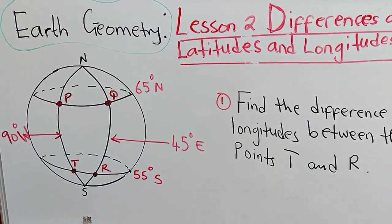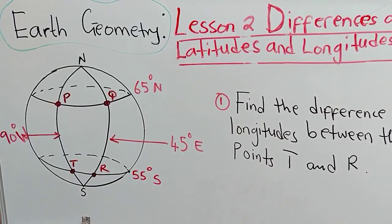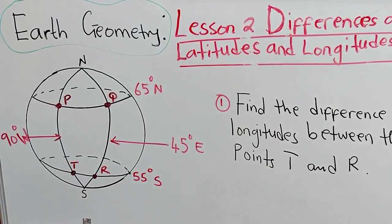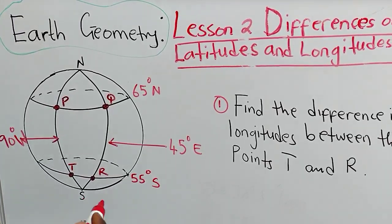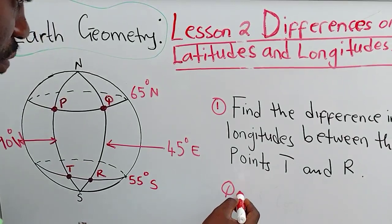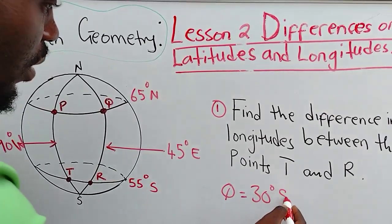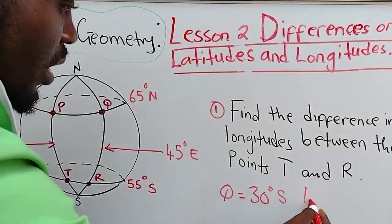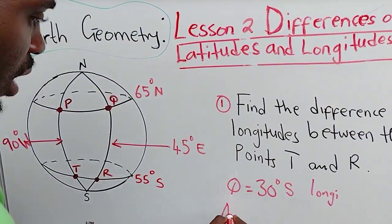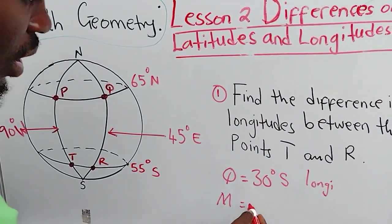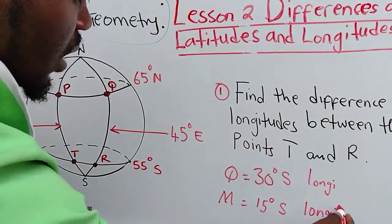Point number 1: if the longitudes are lying on the same side of the Greenwich meridian, you are supposed to subtract. For example, if you are having point Q with a longitude lying at 30 degrees south, and you also have point M lying on 15 degrees south — this is also a longitude — you can see that these two points are lying on the same side of the Greenwich meridian, both on the south side.